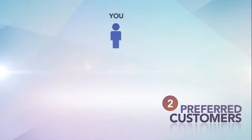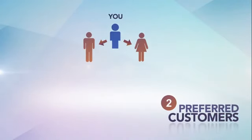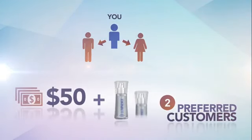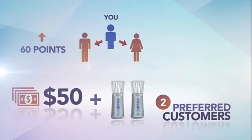Hear the details. Sign up two preferred customers, and they automatically are placed as one on your left and one on your right. At that moment, you will get $50 plus two bottles of serum for yourself, while 60 points go upline, which makes you monthly qualified.